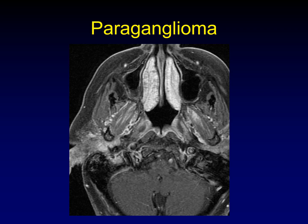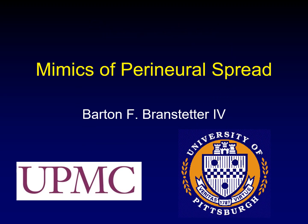Paragangliomas are confusing because they are aggressive and can travel along nerves. Here is a glomus jugulare tumor aggressively eroding through the lateral aspect of the jugular bulb and across the temporal bone out into the parotid gland. You can imagine a tumor in the parotid doing exactly the opposite — working its way back up along the facial canal — rather than this paraganglioma growing out of the temporal bone. A very similar appearance in the pattern of spread. This is the end of part one of Mimics of Perineural Spread.